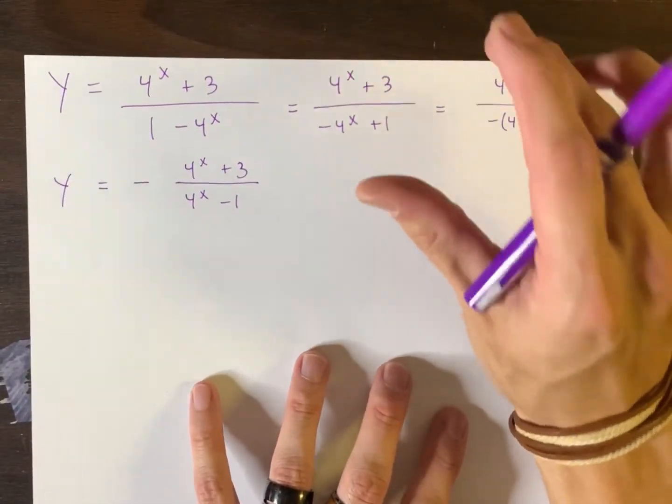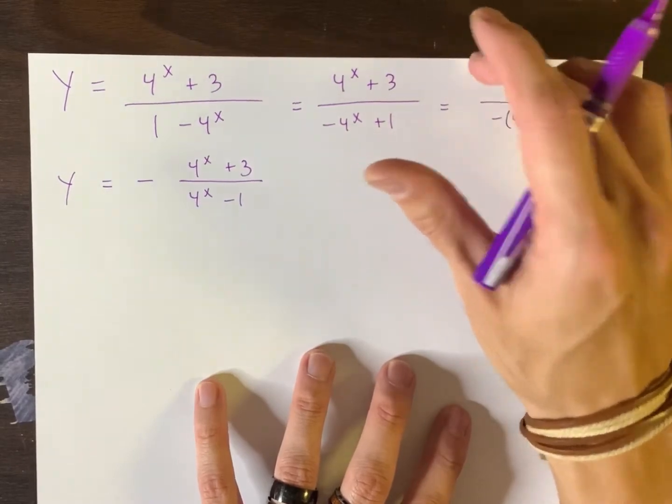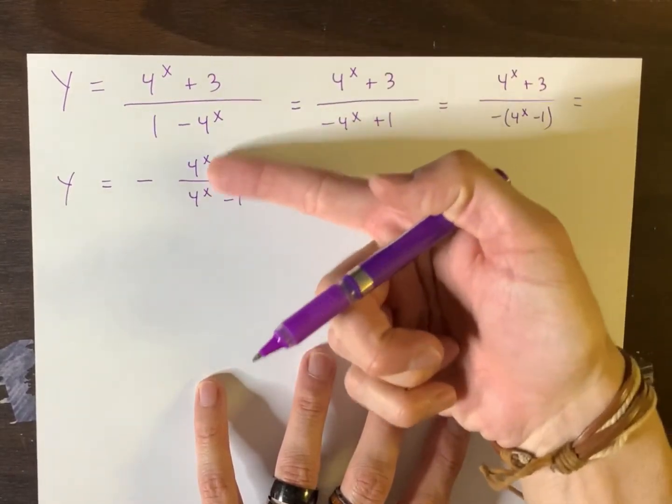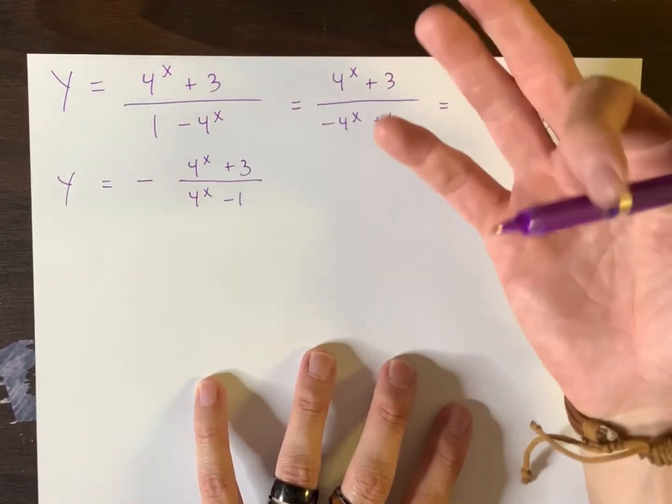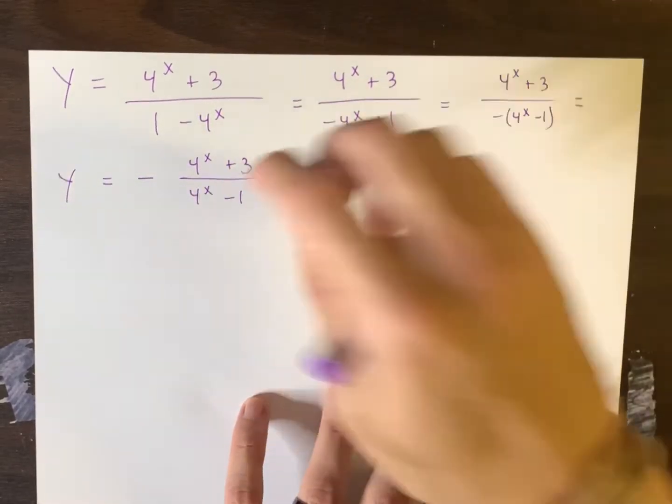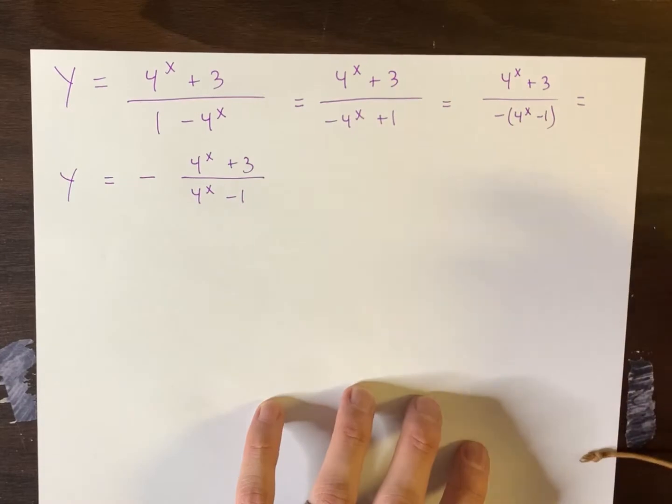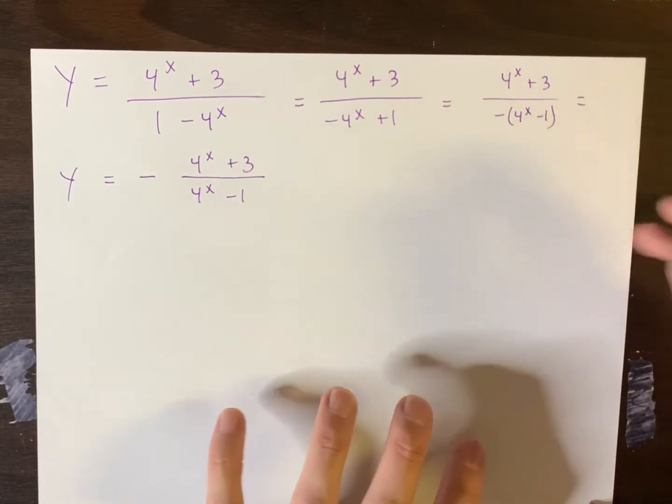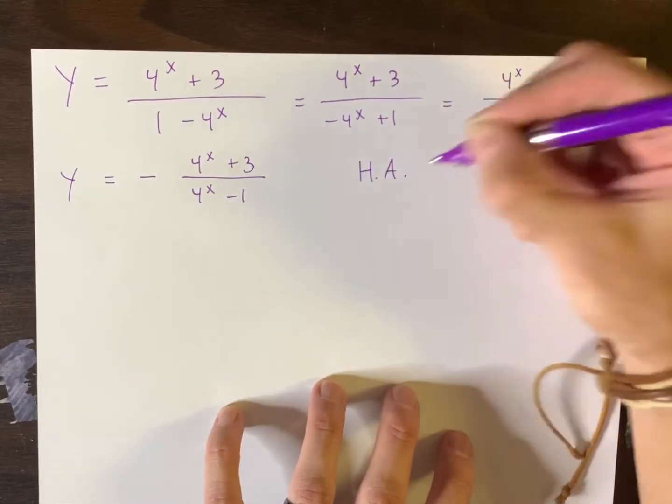Those rules from pre-calc pertained primarily to polynomials, which these are not. These are exponential functions. So those three rules that are popular in pre-calc, those are out the door. This is something else entirely. It's a different type of animal and it behaves in different ways. But we do want the horizontal asymptotes.